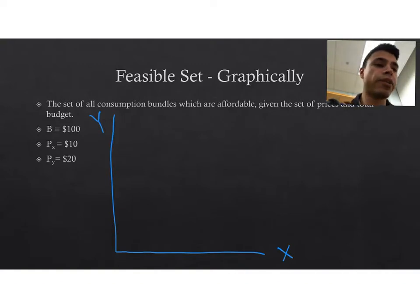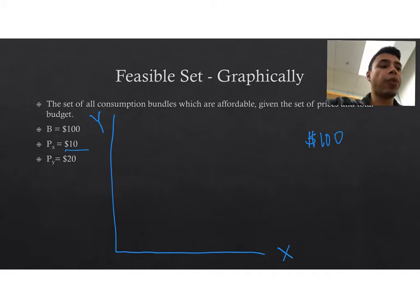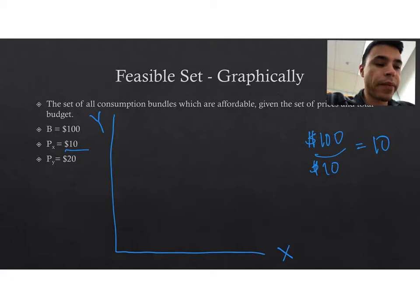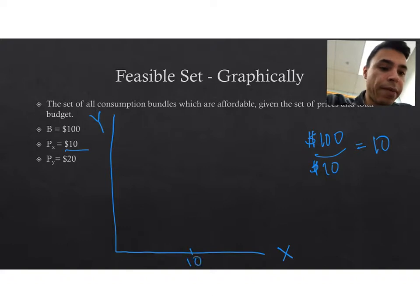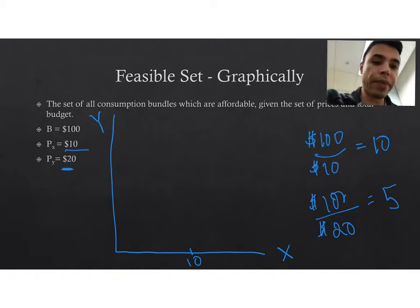So if you have a hundred dollars, and if we spent all of our money on good X given a price of X of $10, then we could at most purchase 10 units of good X. That tells us the horizontal intercept must be 10. And if we were to spend all of our money on good Y, given a price of good Y equal to $20, then 100 divided by 20 equals 5, so the vertical intercept must be equal to 5.